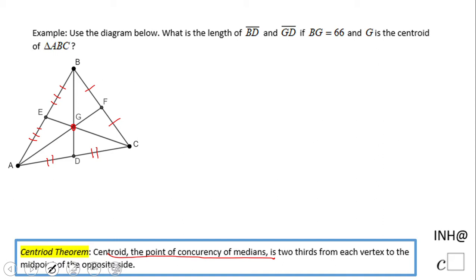What is so important about this centroid? The centroid is two-thirds from each vertex to the midpoint. Let's take a look at our problem. What is the length of BD? If BG is 66, we can write this equation: BG equals two-thirds of BD.